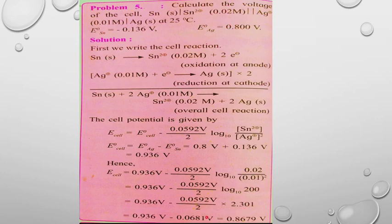Calculating: 0.0592 / 2 × 2.301 = 0.0681 V. Therefore E_cell = 0.936 − 0.0681 = 0.8679 V. The voltage of the cell is 0.8679 V. That completes problem five.